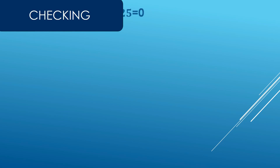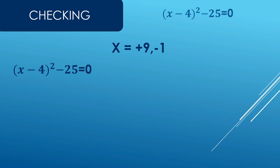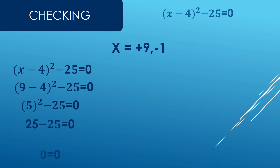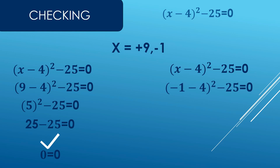Let's check by substituting both solutions into the original equation (x minus 4) squared minus 25 equals zero. For x equals 9: (9 minus 4) squared minus 25 equals 0 → 5 squared minus 25 equals 0 → 25 minus 25 equals 0 → 0 equals 0. It satisfies the equation. For x equals negative 1: (negative 1 minus 4) squared minus 25 equals 0 → (negative 5) squared minus 25 equals 0 → 25 minus 25 equals 0 → 0 equals 0. It satisfies the equation.